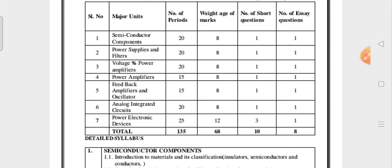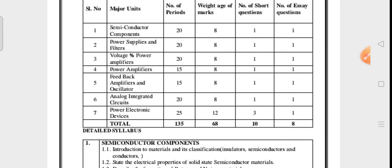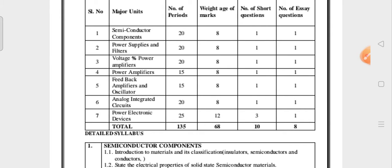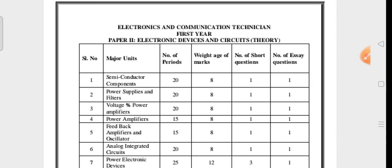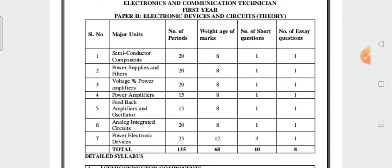Coming to units one, two, three, four, five, and six — you have to give equal preference to all of them. Don't leave any questions; you have to go through all the side headings and important points. If you have any diagrams, tables, and columns, you have to go through those too. Since you belong to the computer department, some of the electronic devices and circuits topics are very, very important. So give equal preference to all the units.